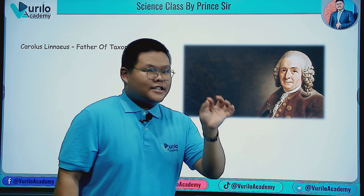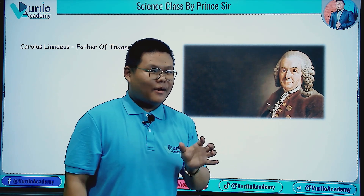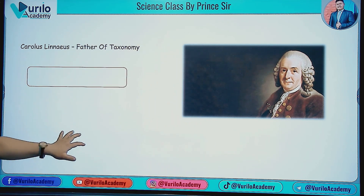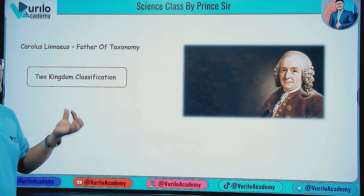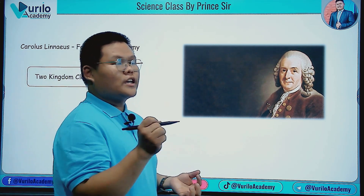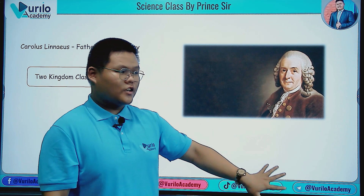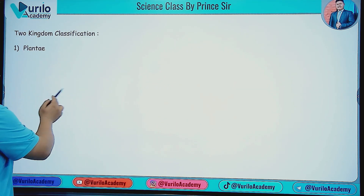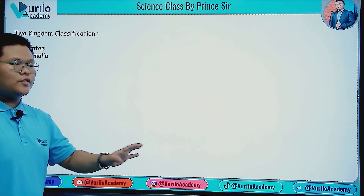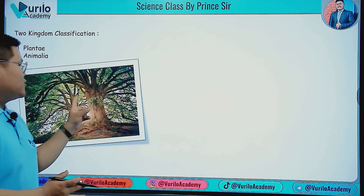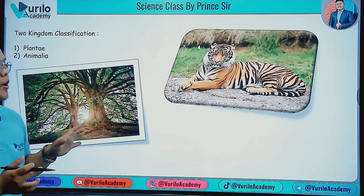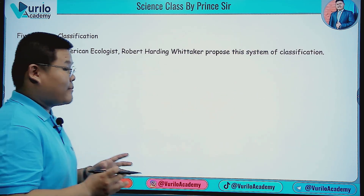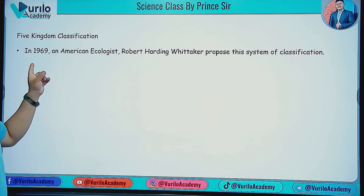From the exam point of view, this is important: the father of taxonomy is Carolus Linnaeus. He proposed the two kingdom classification, which divided all living organisms into two kingdoms: Kingdom Plantae and Kingdom Animalia.